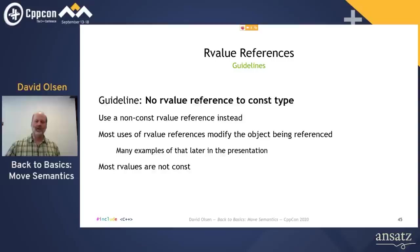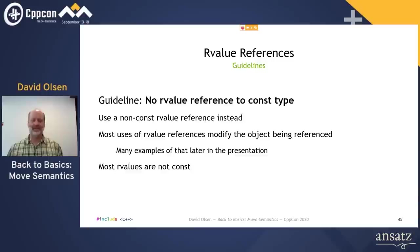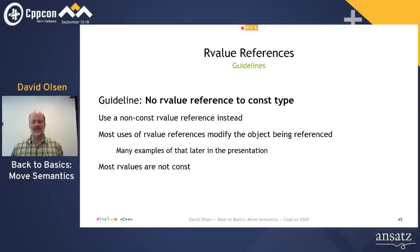The first guideline: no R-value references to const type. While L-value references to const show up all over the place and are very useful, R-value references to const are almost completely useless and just get in the way. If you want to define an R-value reference, just leave out the const. First, most of the time when you define an R-value reference, it's because you want to modify the object being referenced — a const R-value reference would prevent you from doing that. Second, R-values themselves are almost never const, so there is almost nothing that a const R-value reference can bind to that a non-const R-value reference cannot. So: no const R-value references.